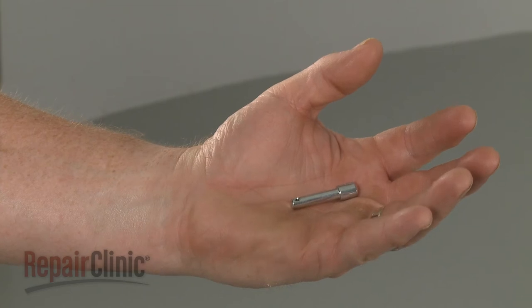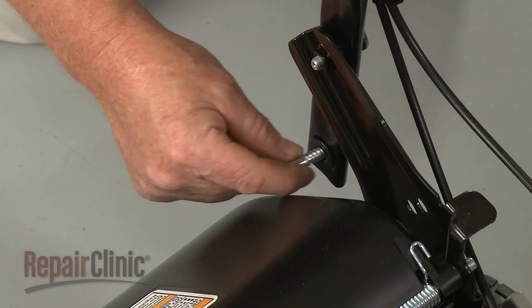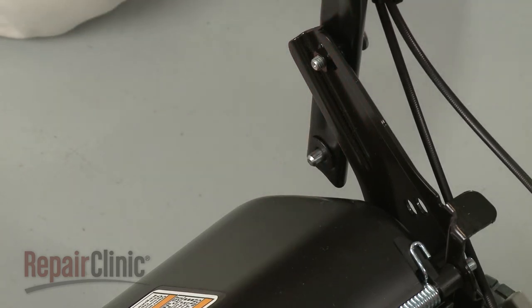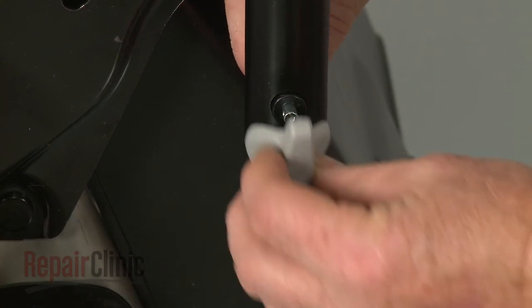Install the new handle lock pin by sliding the spring onto the pin, then insert the pin into the collar. Now align the hole in the knob with the hole in the lock pin.